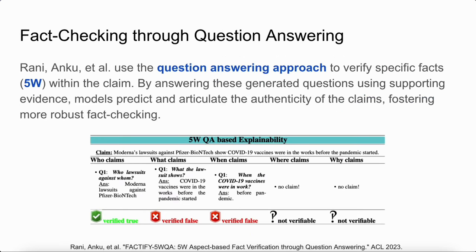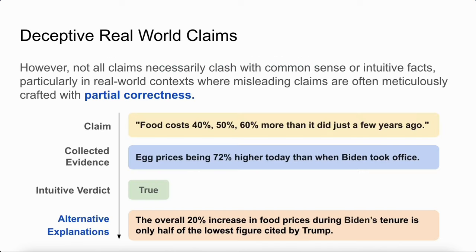In prior work, Running et al. used a question-answering approach — specifically asking 5W questions — to verify the authenticity of claims. However, not all claims fail to satisfy intuitive facts. For instance, a claim may seem true if we simply consider the evidence, but the result might be different if we look at an alternative explanation.